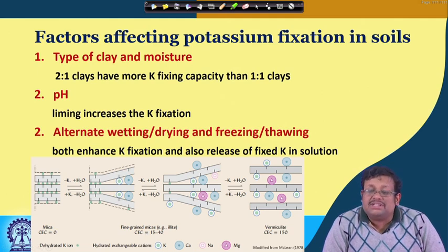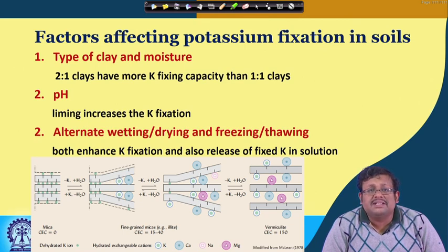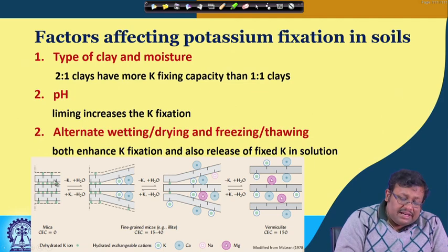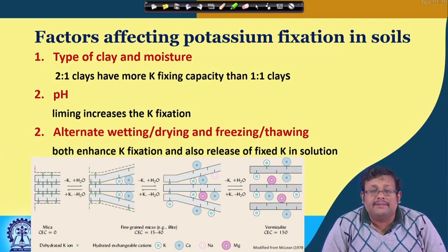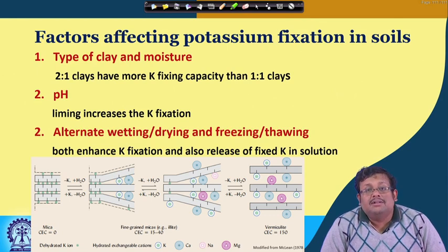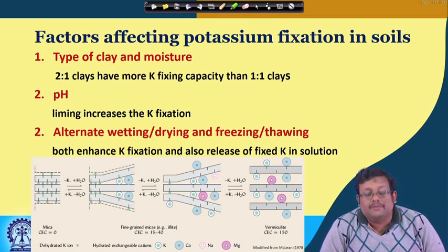Factors affecting potassium fixation: type of clay and moisture are very important — 2:1 type clays have more potassium fixation capacity than 1:1 type clays. pH also matters as liming increases potassium fixation. Alternate wetting and drying, and freezing and thawing, affect potassium fixation in the interlayer spaces of mica. Through weathering processes, interlayer potassium in mica gets replaced by magnesium, ultimately producing vermiculite — this conversion is mediated by alternate wetting and drying or freezing and thawing.